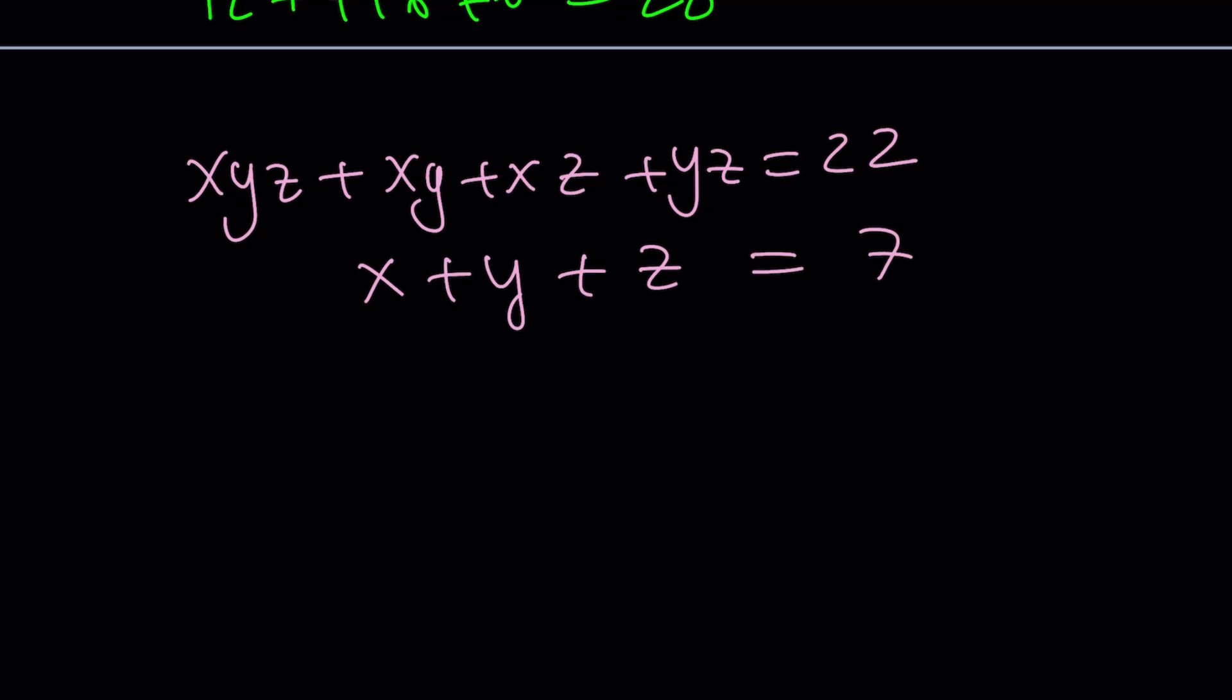And by the way, we said Diophantine, so x, y, z are positive integers. If x, y, z are real numbers, then there will be infinitely many solutions. That's why the solutions are restricted.